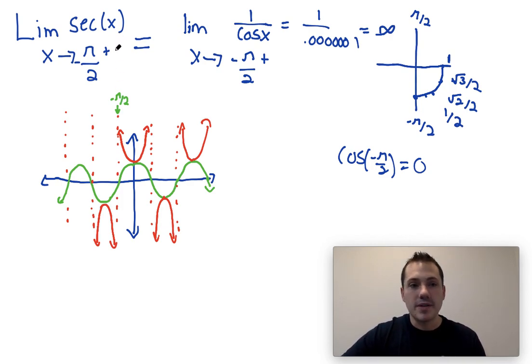And that's how you do it. That's kind of a couple of different ways to look at the limit as x approaches negative π over 2 from the right of the secant of x. Hope you find this video helpful.